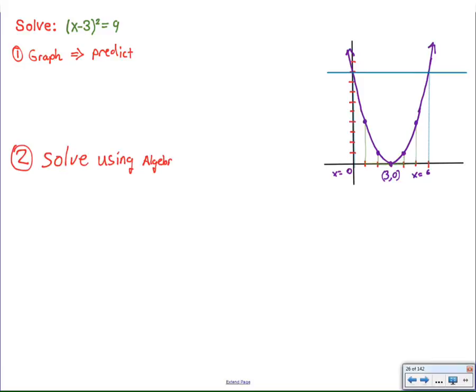But since this is an algebra class, we're also going to learn the algebraic procedures for solving the same equation. As before, we're going to take the square root of both sides of the equation. The square root of 9 is 3. That's no problem. The square root of x minus 3 squared is, you guessed it, the absolute value of x minus 3.